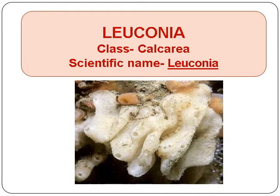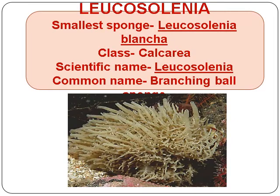Leuconia. Class Calcarea. Scientific Name: Leuconia. Leucosolenia blanca. Class Calcarea. Scientific Name: Leucosolenia. Common Name: Branching Ball Sponge.